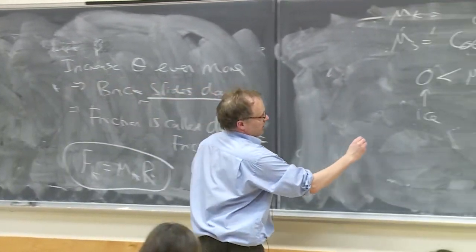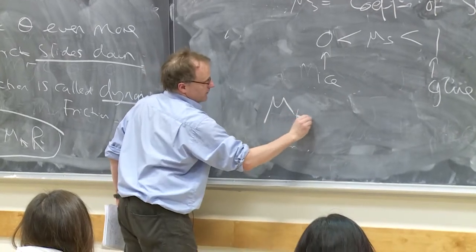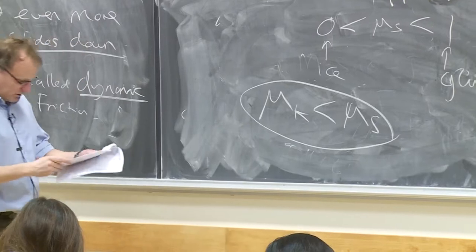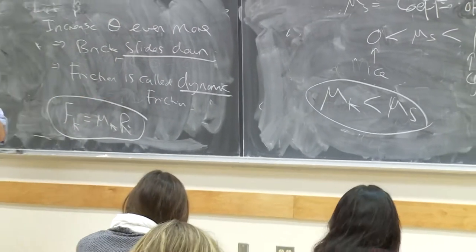So one of the things that you need to notice is that mu k is less than mu s. That's important. I'm going to start this again. Here's an example.